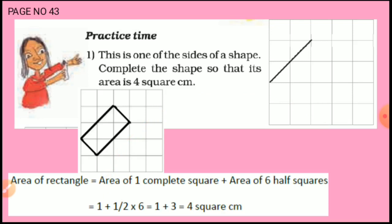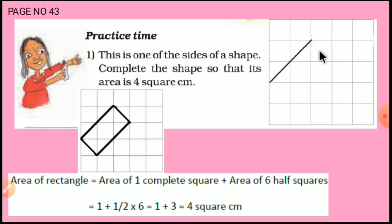Here there is a practice time. This is one of the sides of a shape. Complete the shape so that its area is 4 square cm. We should complete the area in such a way so that the area of that shape is 4 square cm.